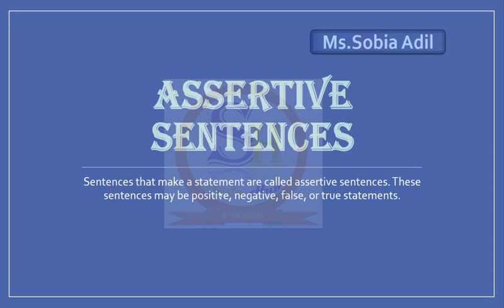Sentences that make a statement are called assertive sentences. This sentence may be positive, negative, false or true statements. It can be a true statement or a false statement; it can be negative or positive. It will be a statement only — it cannot be an order, it cannot be interrogative, it cannot be a prayer or an expression. These will be only simple statements.